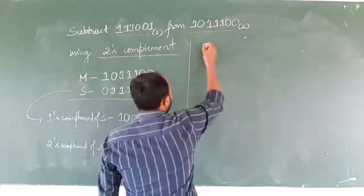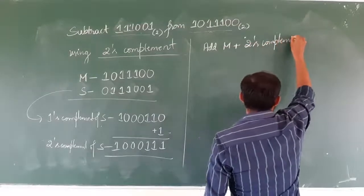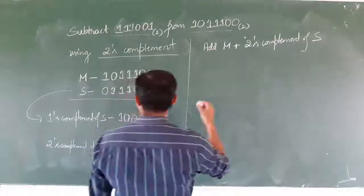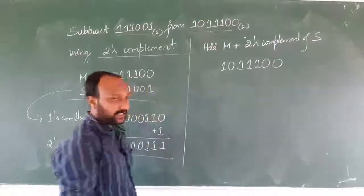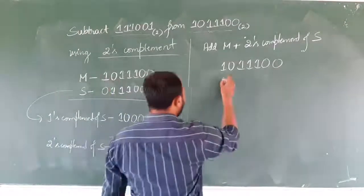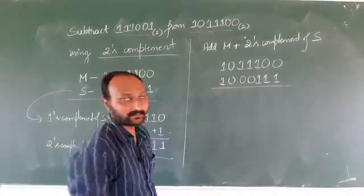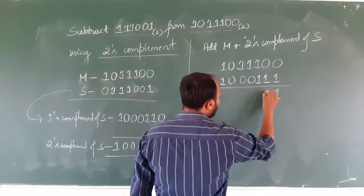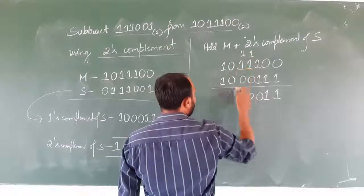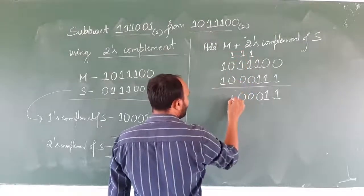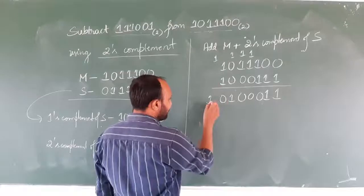Now we need to add minuend plus two's complement of subtrahend. The minuend value is 101100 and the two's complement of subtrahend is 1001001. Adding: 0 plus 1 is 1; 0 plus 1 is 1; 1 plus 1 is 0 carry 1; 1 plus 1 is 0 carry 1; 1 plus 1 is 0 carry 1; 1 plus 0 is 1; 1 plus 1 is 0 carry 1 to the next level, but there is no higher level. So we consider the carry bit 1 here, but this is an extra bit and needs to be discarded.